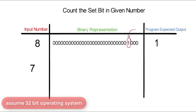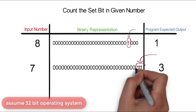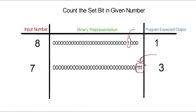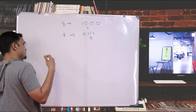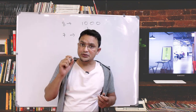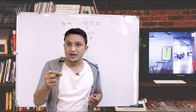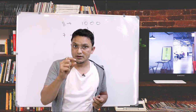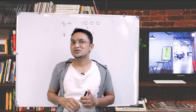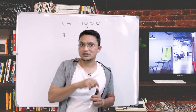If I give the number 7, the output should be 3. Why 3? Because in the binary conversion, three bits are set. In a similar way, for any given number, you need to give the count of 1s in that number. That is the problem statement which we are going to solve in this session.